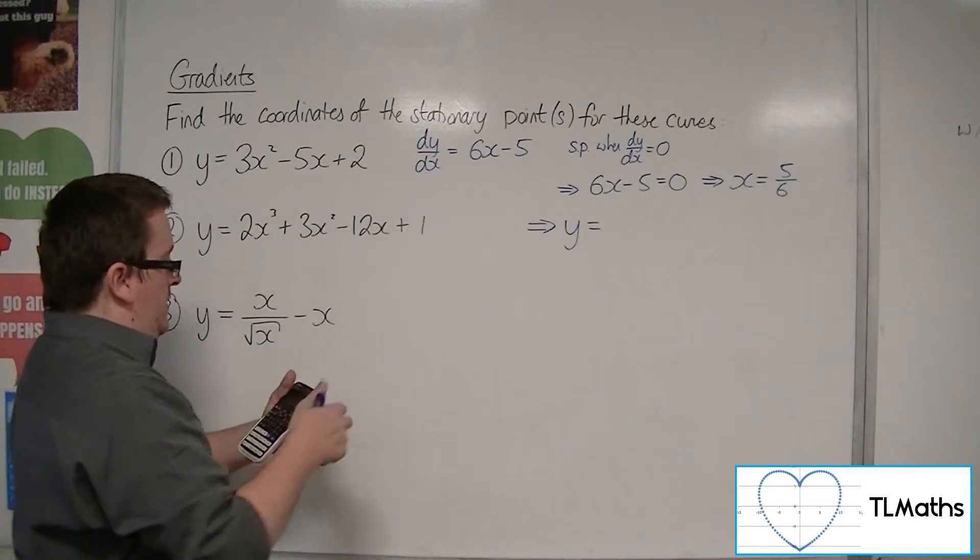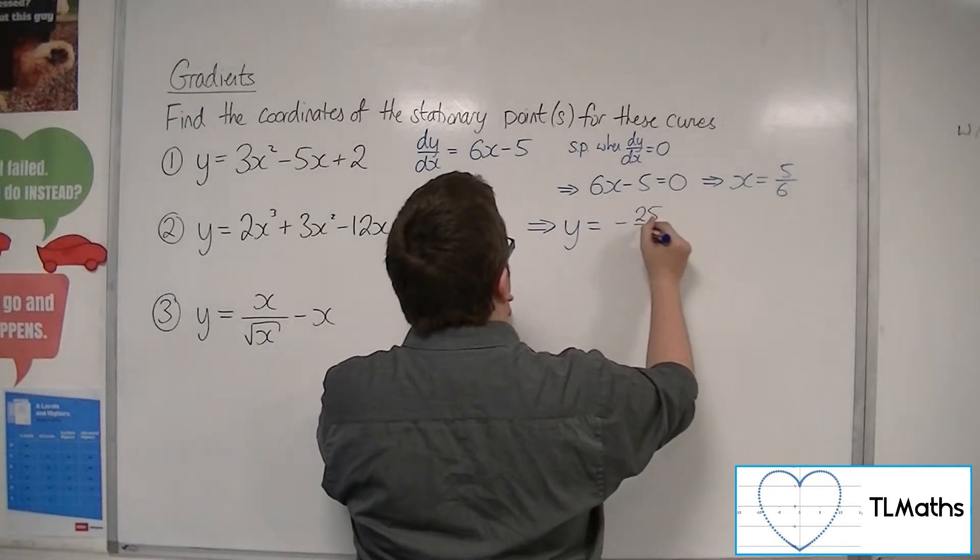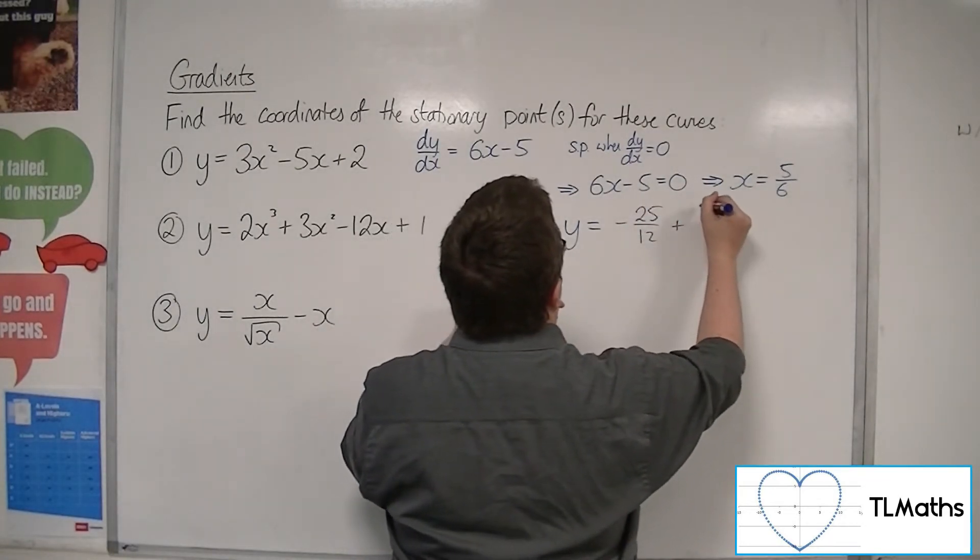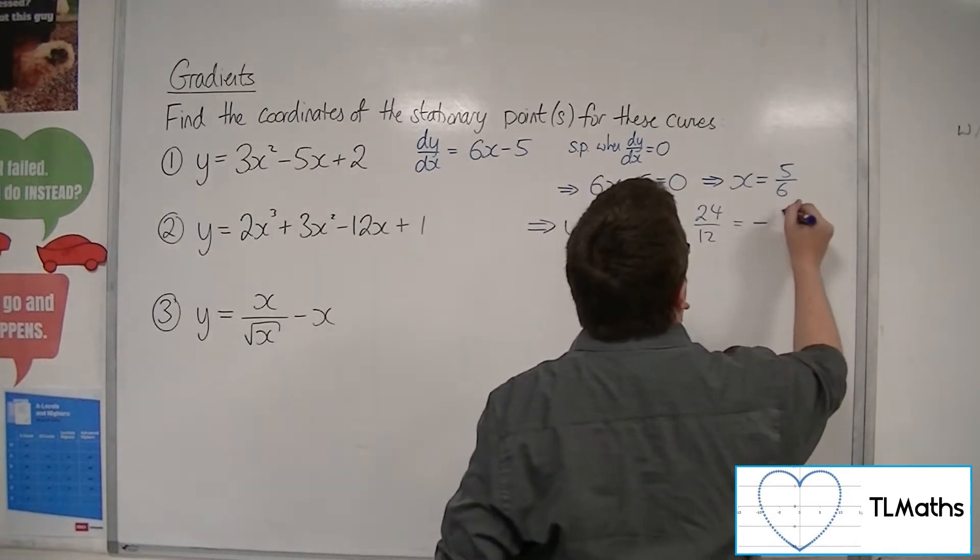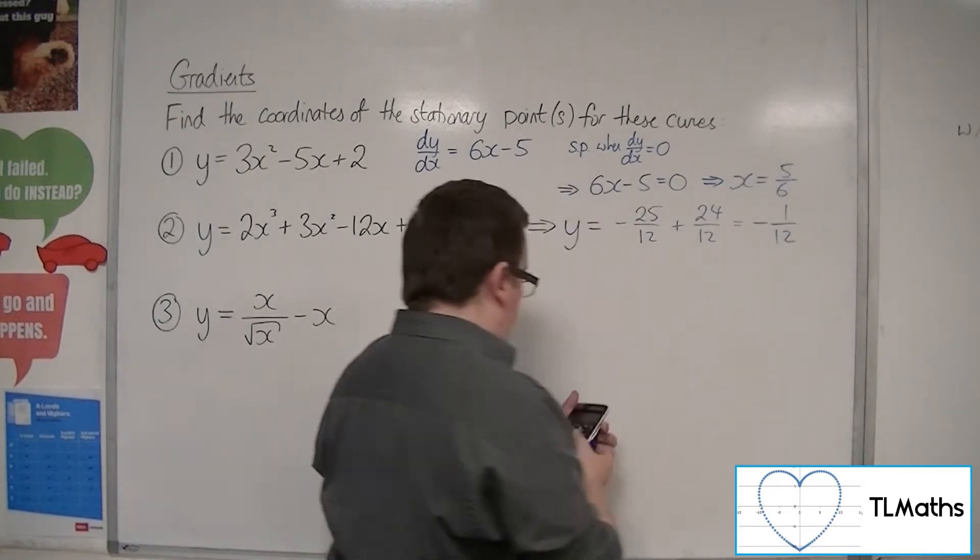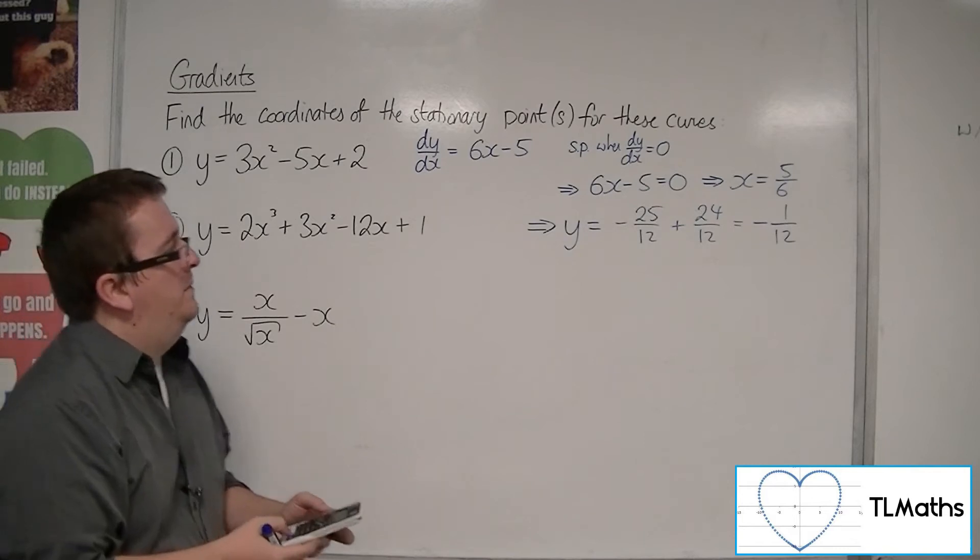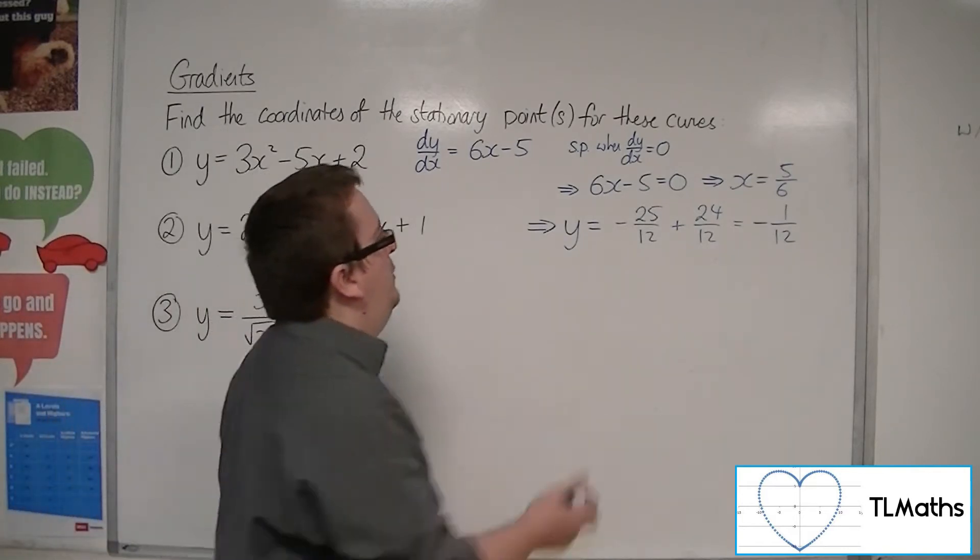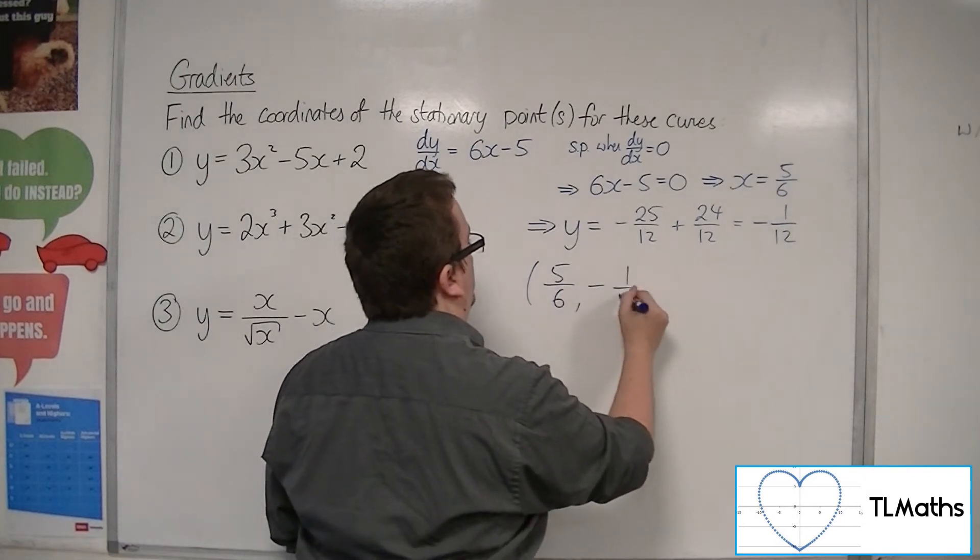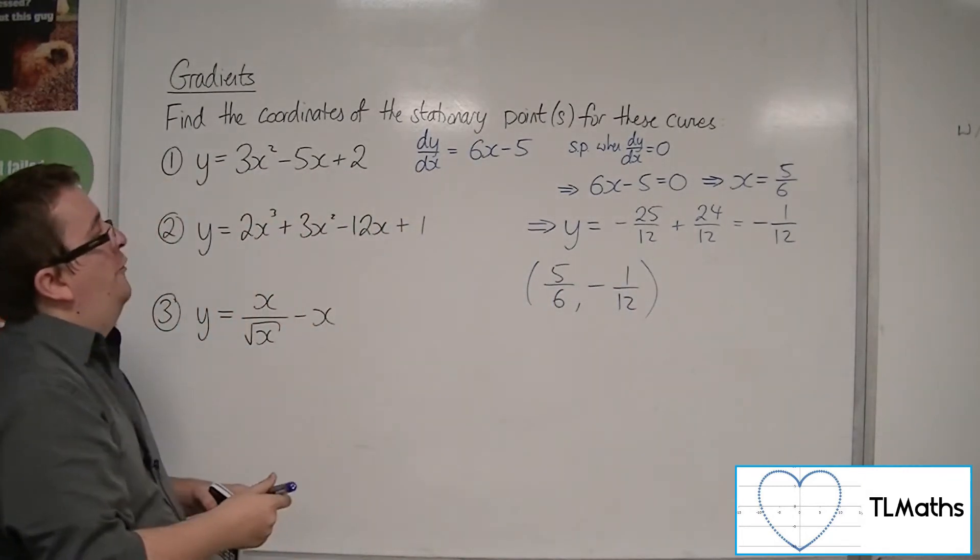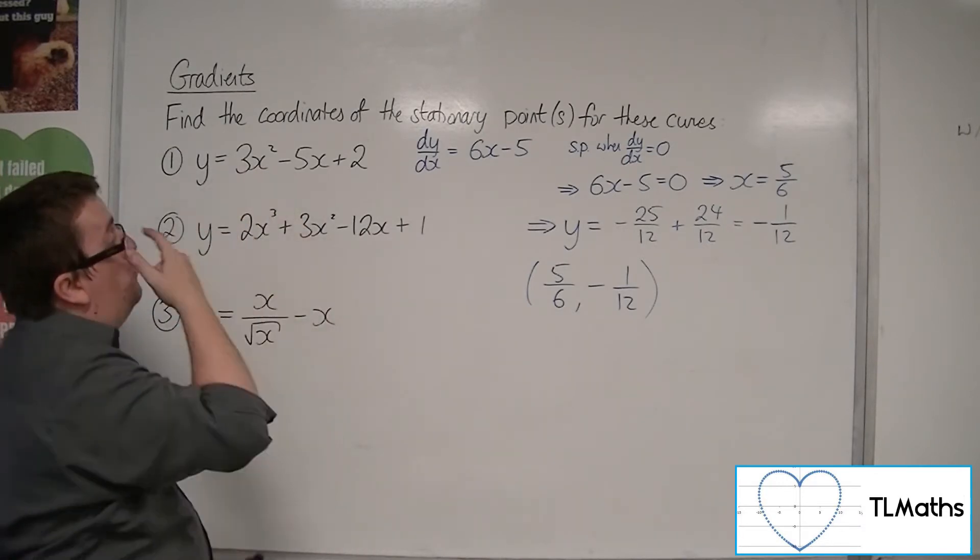So we get down to minus 25 twelfths, plus 2, so 24 twelfths. That's just minus 1 twelfth. My calculator doesn't seem to really like writing that down. So 5 sixths, minus 1 twelfth, that's the coordinates of the singular stationary point of this parabola.